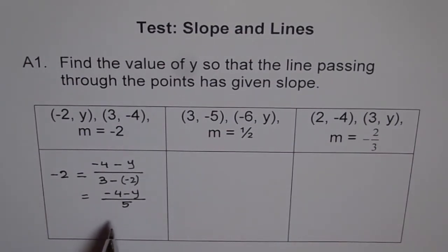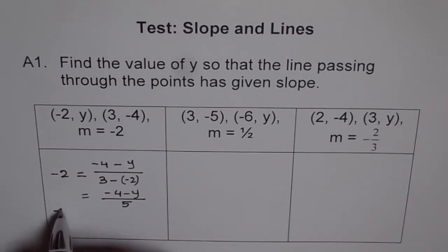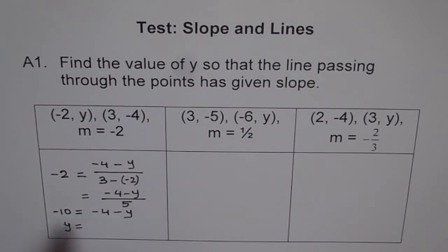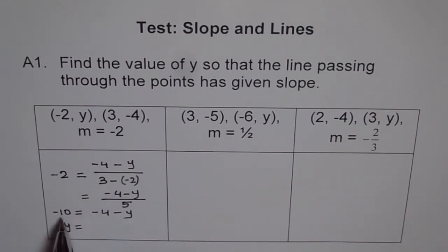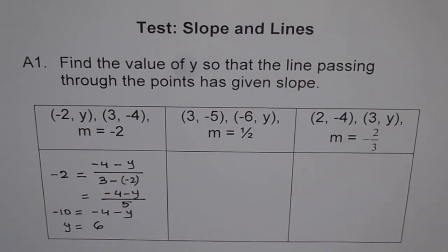Now we will cross multiply. So 5 times 2 is 10 with a minus sign, giving us minus 10 equals to minus 4 minus Y. Now you can solve for Y. We will bring Y to this side — that means we will add 10 on both sides. When you add 10 to both sides, it becomes 0 here and plus 10 here. Minus 4 plus 10 will be 6. So we get Y equals to 6.